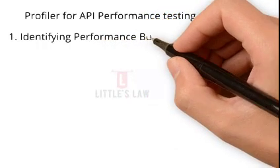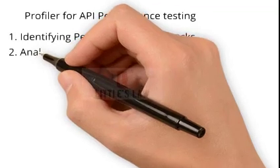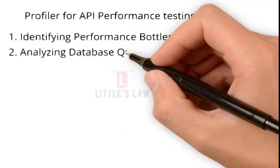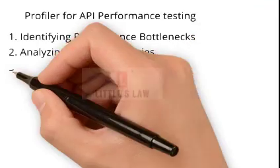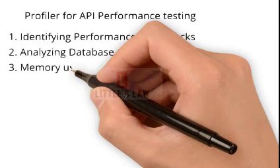The first benefit is identifying performance bottlenecks. Profilers can help pinpoint specific functions or methods in the code that contribute to overall latency or poor API performance. By analyzing execution time and resource usage of individual code segments, profilers can highlight potential bottlenecks. The next point is analyzing database queries — APIs often interact with databases to retrieve or store data. Profilers can capture the database queries executed by the API and provide information on their performance such as execution time, frequency, and resource consumption, helping identify slow or inefficient queries.